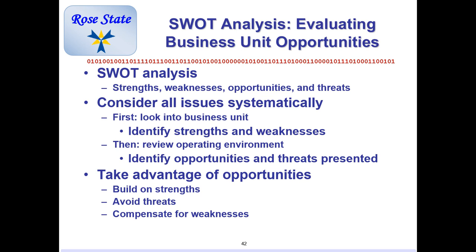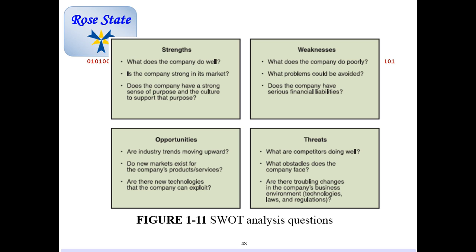Primary activities include identifying customer needs, designing, purchasing materials and supplies, manufacturing products or creating services, marketing, selling, delivering, and providing after-sale service and support — that sounds like Best Buy. Companies use a SWOT analysis — strengths, weaknesses, opportunities, and threats. It's a four-block grid: strengths and weaknesses are internal to your organization, while opportunities and threats are external. You build upon strengths, compensate for weaknesses, take advantage of opportunities, and avoid threats at all costs.